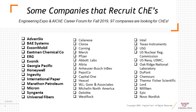Some companies that recruit Virginia Tech chemical engineers are shown in this slide: Advancix, BAE Systems, ExxonMobil, Eastman Chemical — a wide variety of companies are looking for and hire Virginia Tech chemical engineers because of their capability. Look this slide over and see if any company resonates with your student.